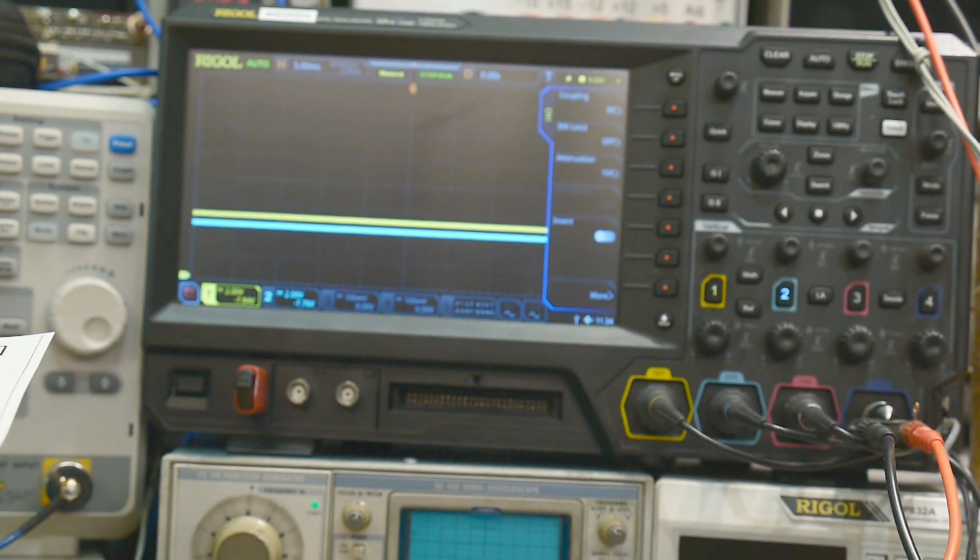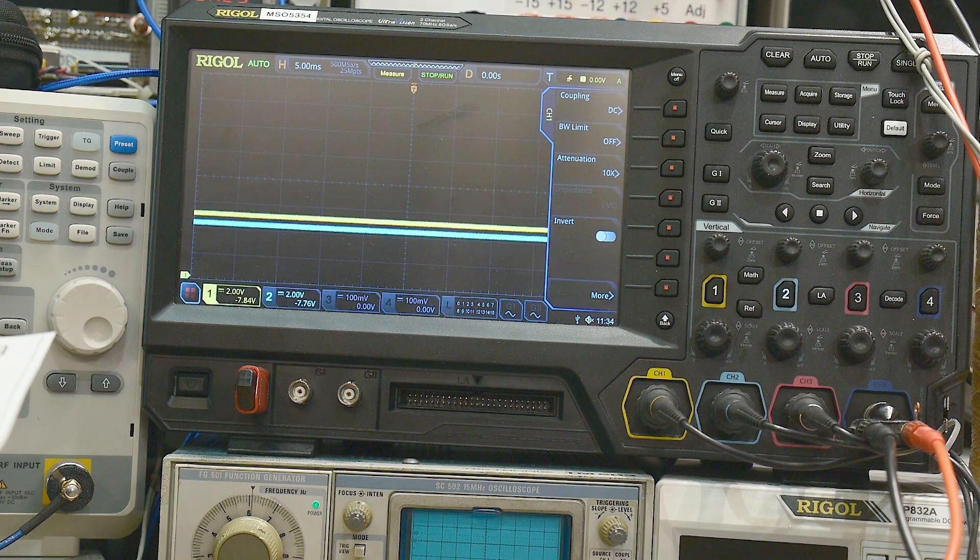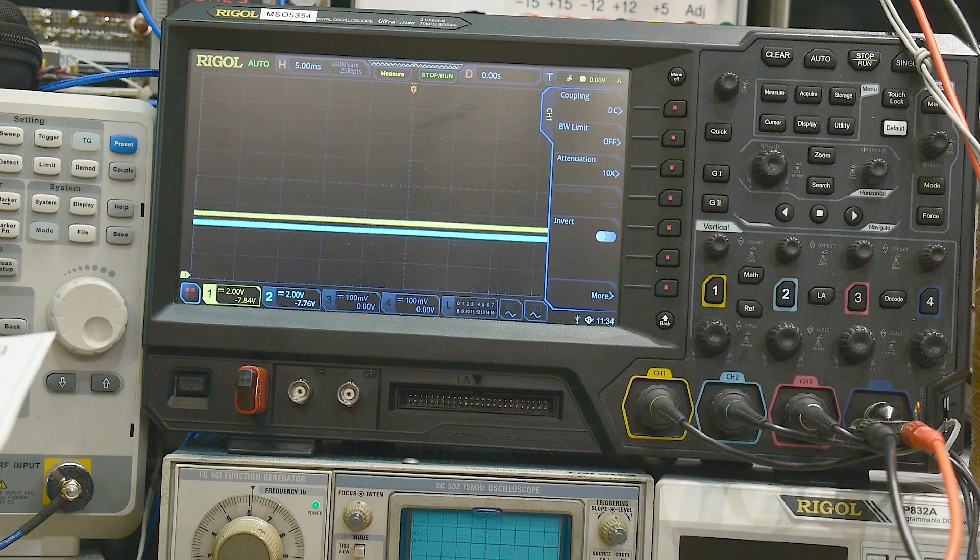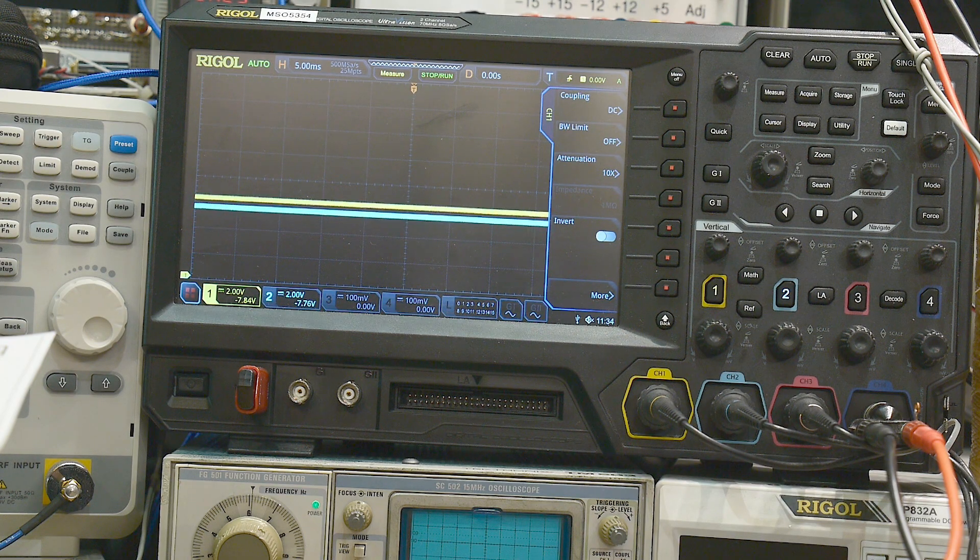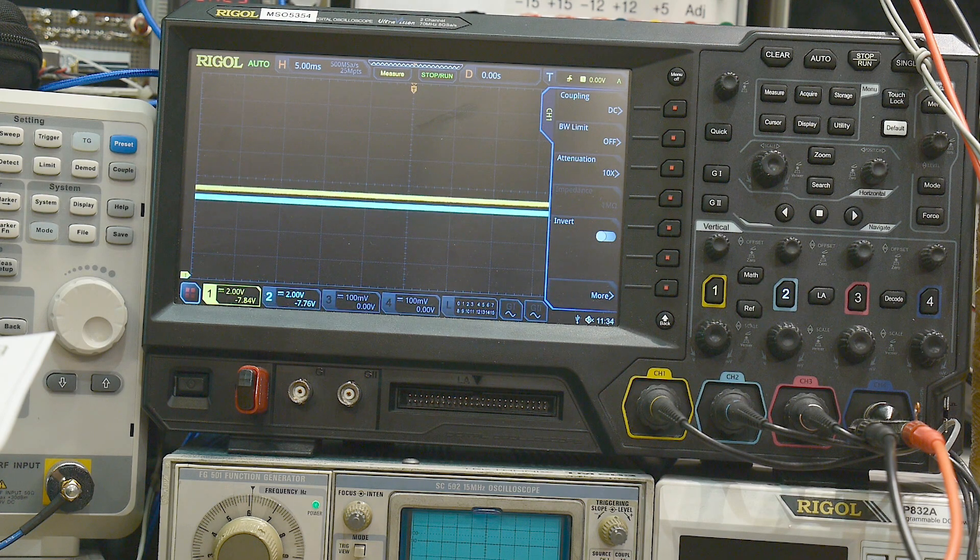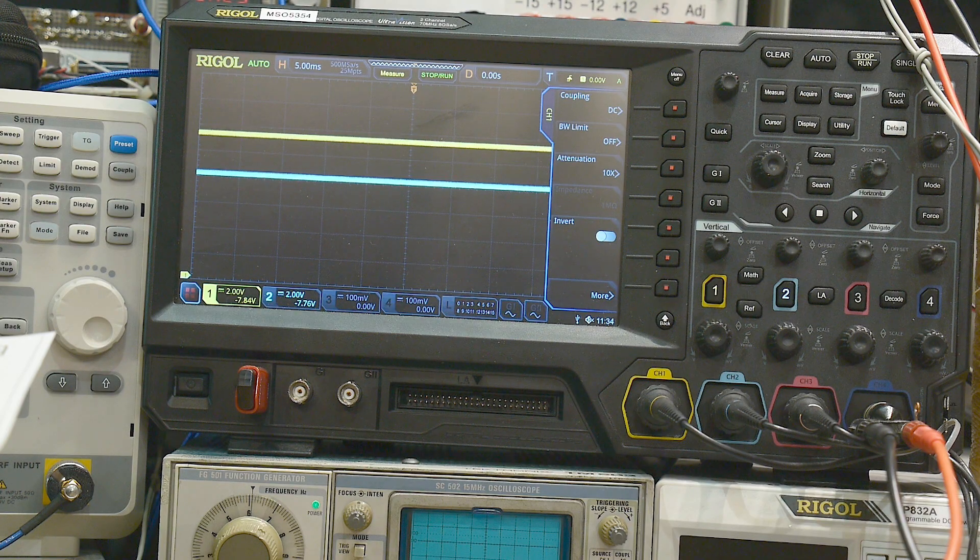So let's take a look at this. The yellow trace will be the input and the cyan trace will be the output. I can change that and you can see that we need to get up to a certain amount of input before we start to regulate. There we're starting to regulate, so we're inputting more voltage and we're getting less voltage output, so it's regulating.